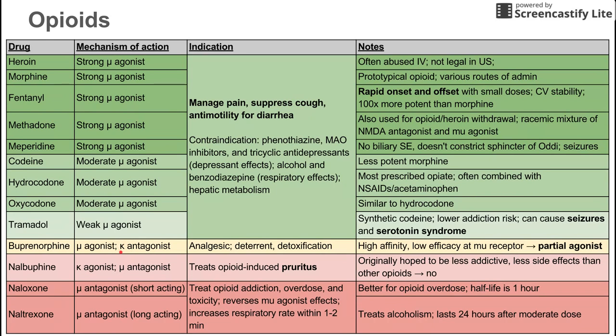The mu and the kappa are the most significant, and the drugs that we're going to be talking about affect those receptors. We're going to be going down this list. It's organized in order from mu agonist to mu antagonist, and the color scheme corresponds with that ordering.